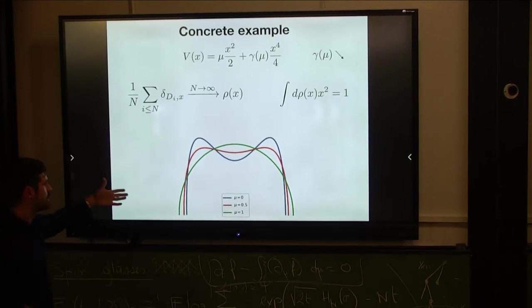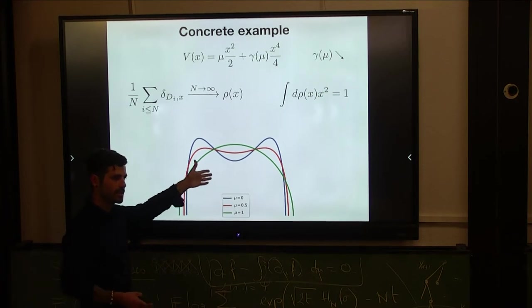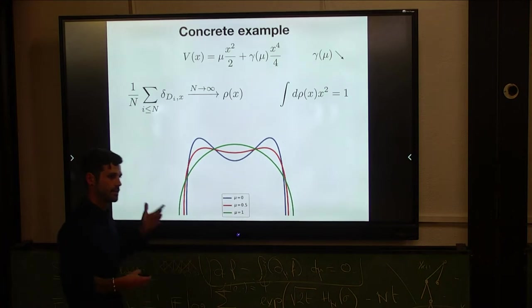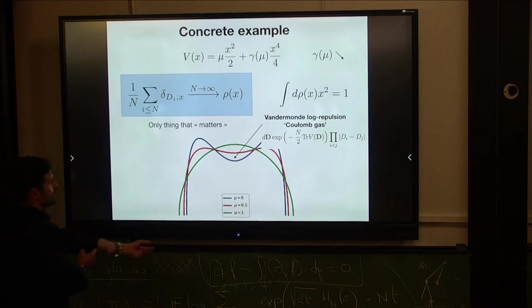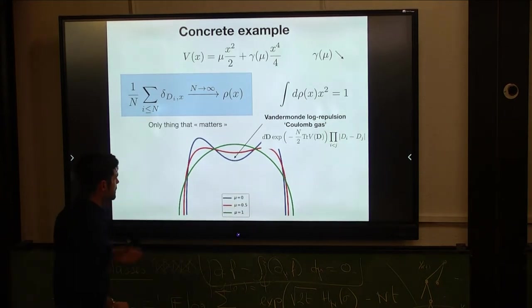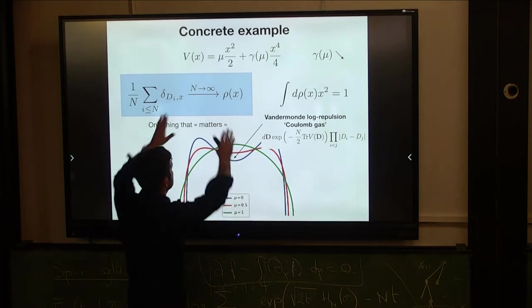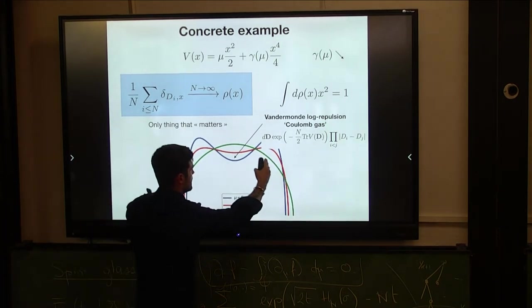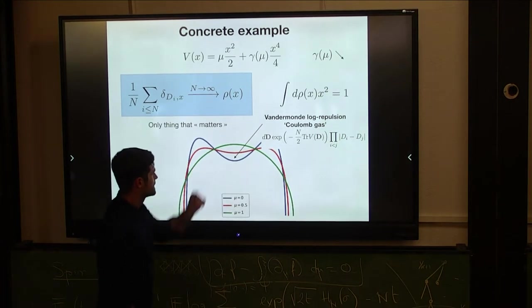And actually, in the numerics, what I will do is that instead of simulating a Dyson-Brighton motion to get the eigenvalues, which can be complicated, I will generate IID eigenvalues according to the density. For those that are not too familiar with random matrix theory, this may look weird that as I decrease mu, so the potential is more and more confining, what you see is that the density develops this kind of two maxima.